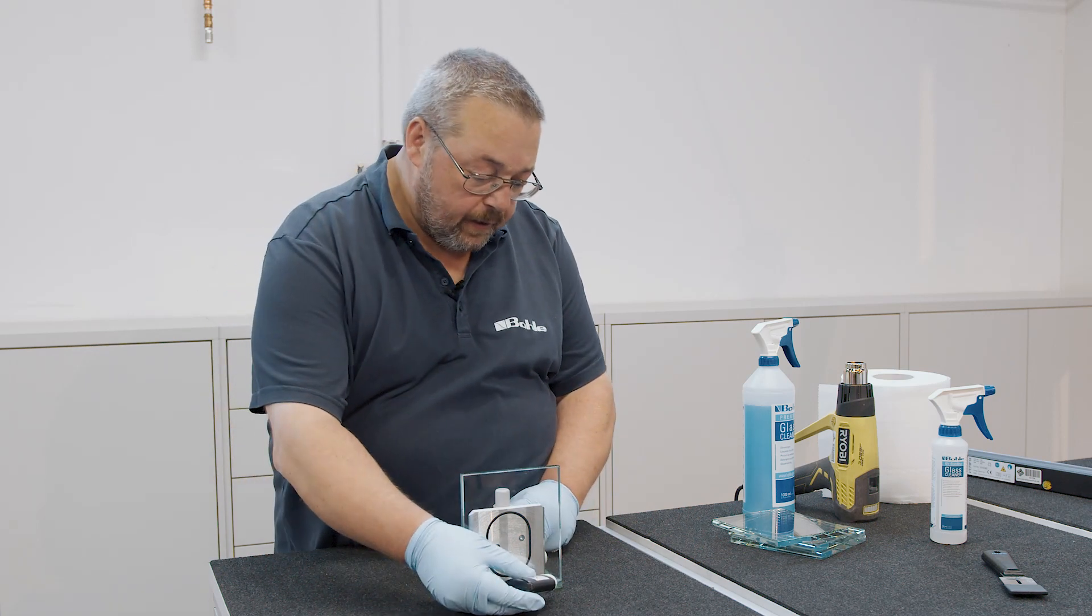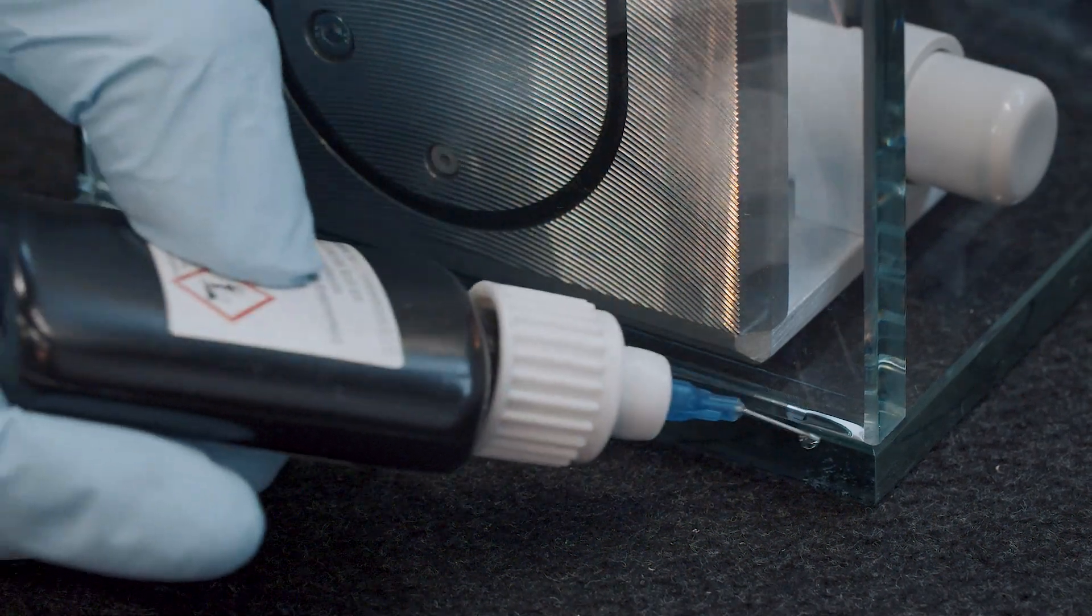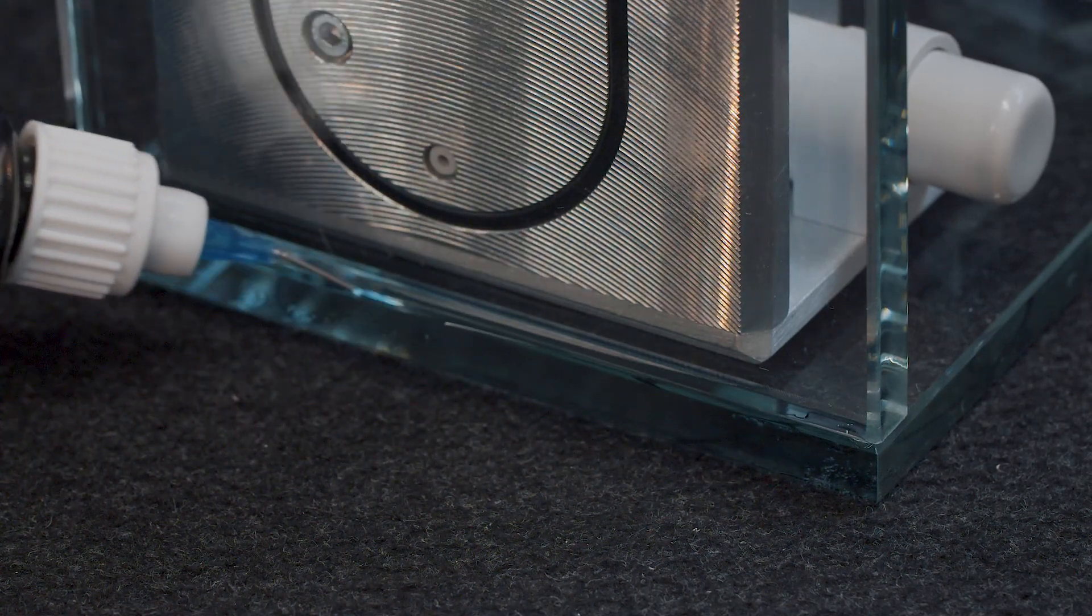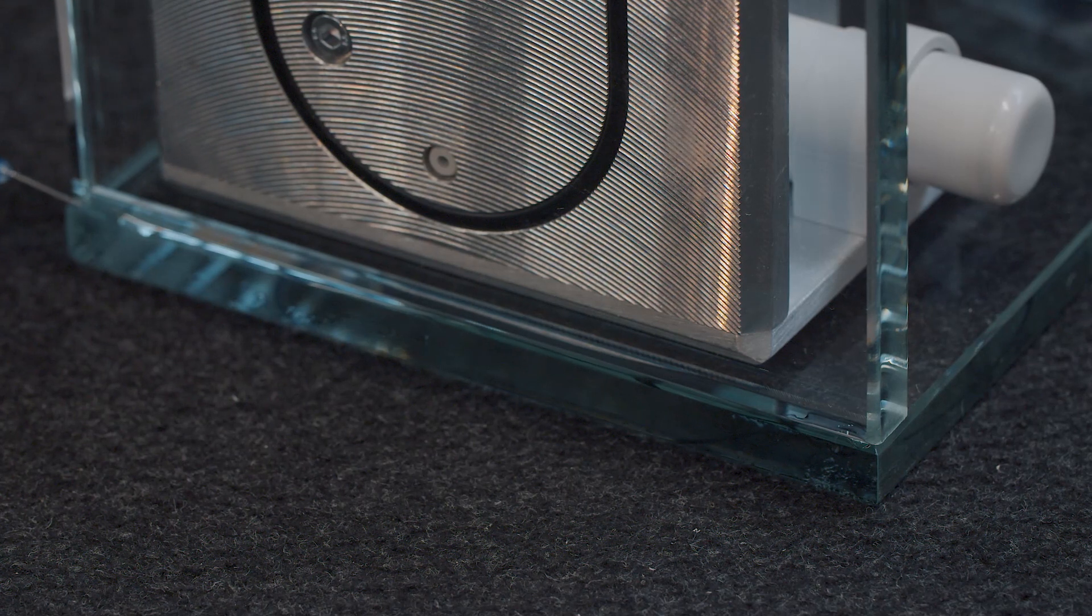To do so, I place the dosing needle into the bonding seam between the two panes, slightly press the bottle, and slowly slide along the entire seam while I continue pressing the bottle.